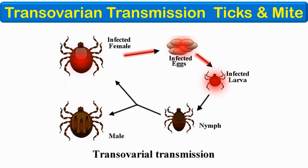Another interesting pathway of transmission is where the pathogen is transmitted from the parent to the offspring by the trans-ovarial route, and the vector is infectious right from its birth. Examples of such vectors include ticks and mites that lay eggs that are already infected.